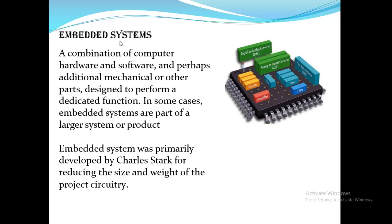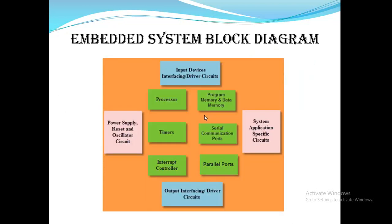An embedded system is a combination of hardware and software, with additional mechanical parts and power supply. It contains digital-to-analog converters, analog-to-digital converters, filters, amplifiers, counters, timers, and many other peripherals. We use embedded C to program a hardware device and make it work as our desired embedded system.